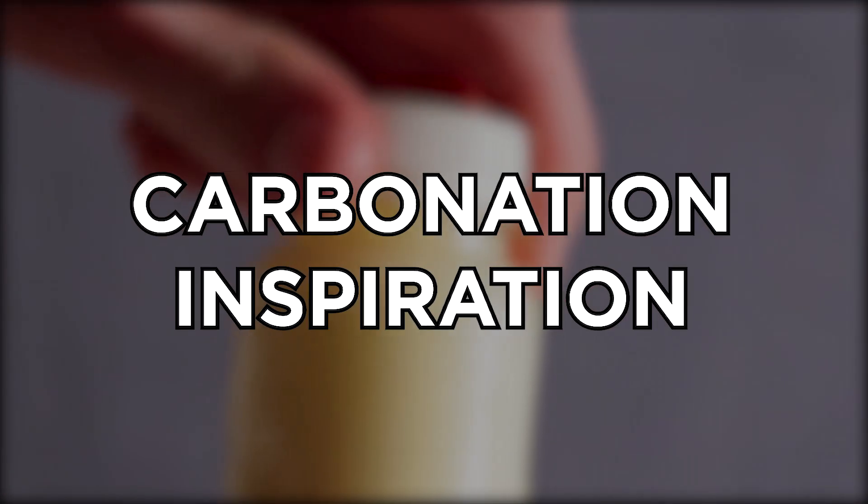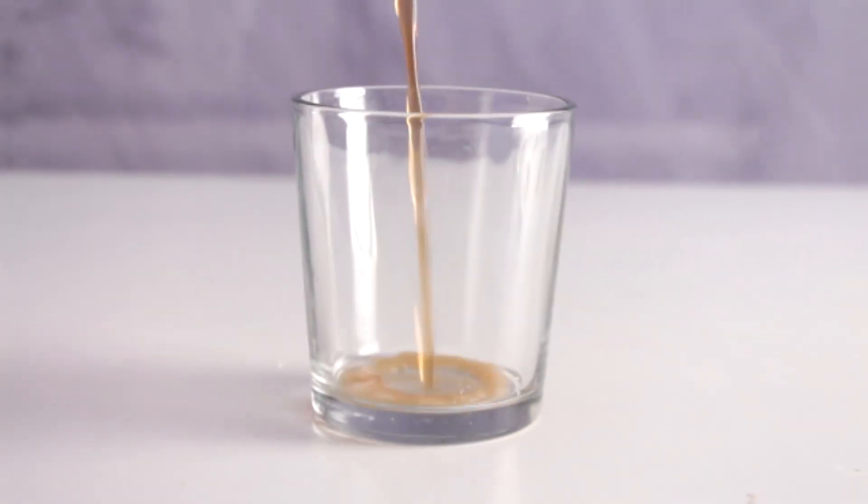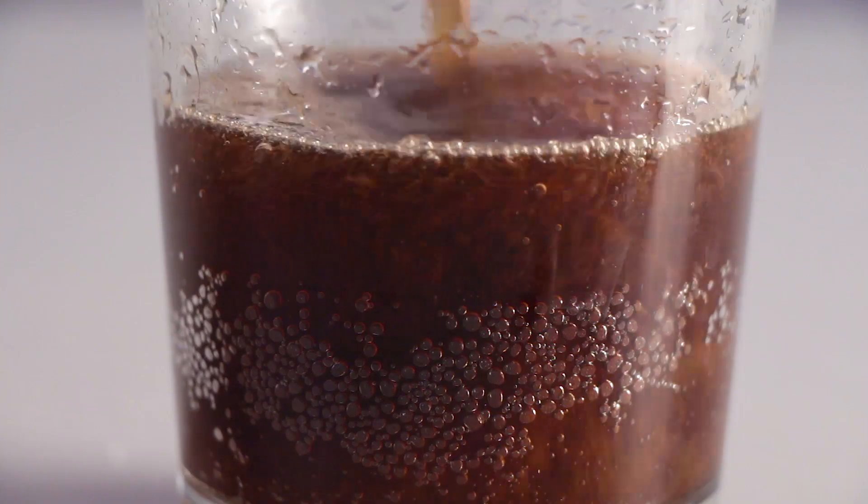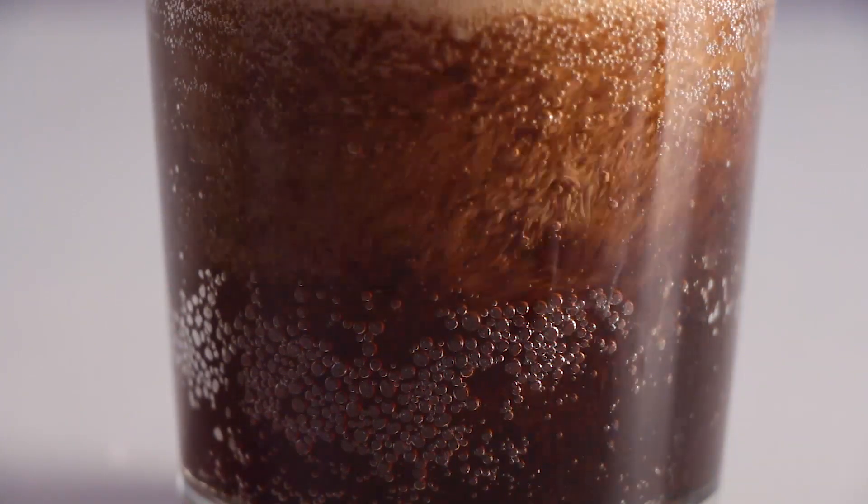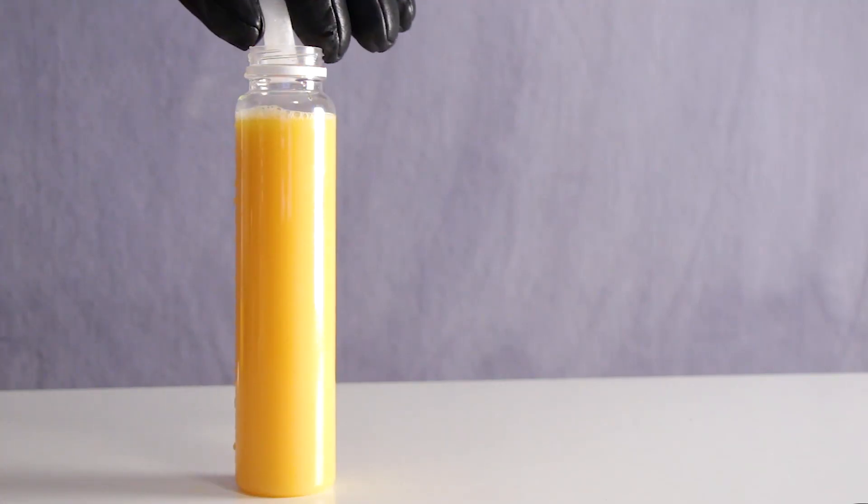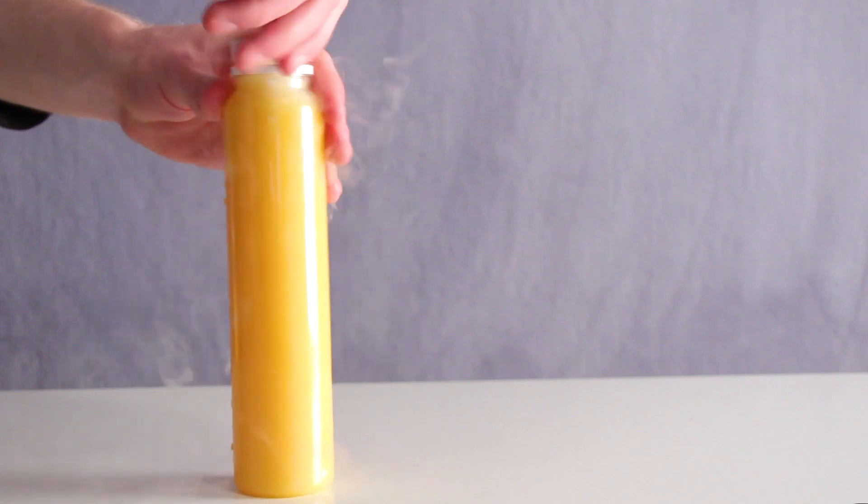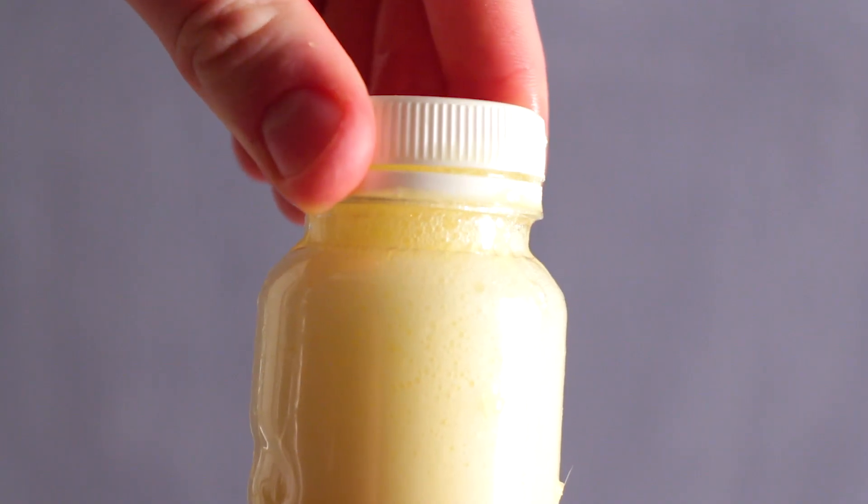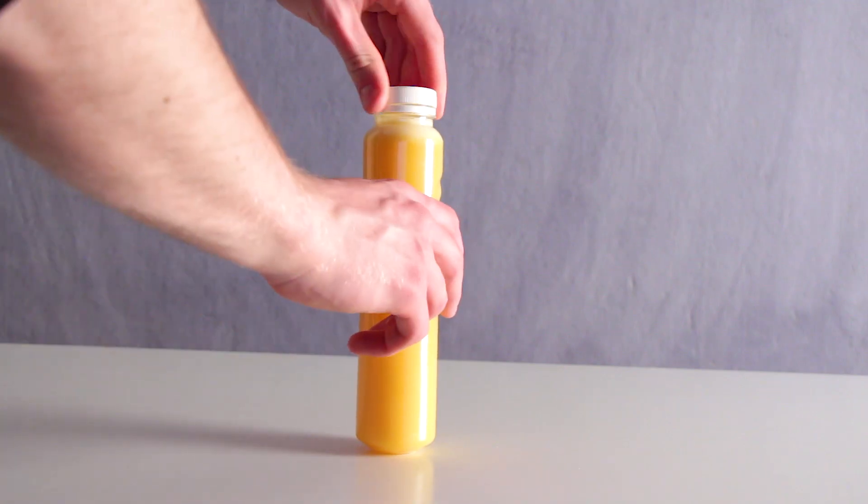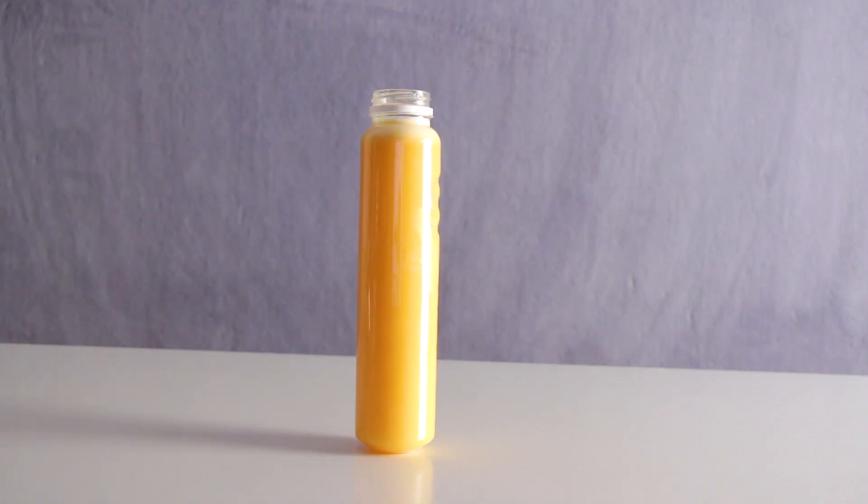Number 5, Carbonation Inspiration. Carbonated beverages all work on the same principle, and that distinctive fizz is easier to achieve than you might think. Simply fill a plastic bottle with your drink of choice, place a small amount of dry ice inside, screw on the cap, and give it a good shake until it dissolves. Make sure to take the cap off a few times during the process to release the pressure. Once the CO2 is dissolved, you're ready to enjoy your freshly fizzed beverage.